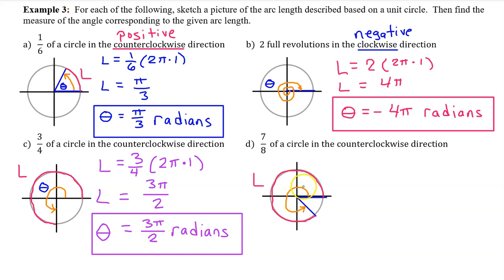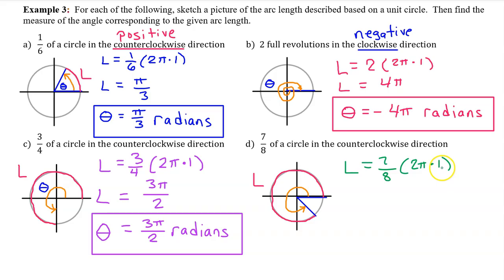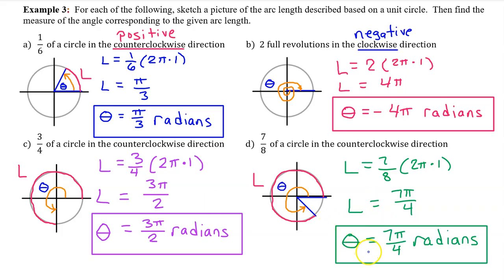Part D: seven-eighths of a circle in a counterclockwise direction, so the angle measure will be a positive number. The arc length L will be seven-eighths of the circumference, so seven-eighths times 2πr times 1. This is 14π/8, which reduces to 7π/4. Therefore the angle measure is 7π/4 radians.